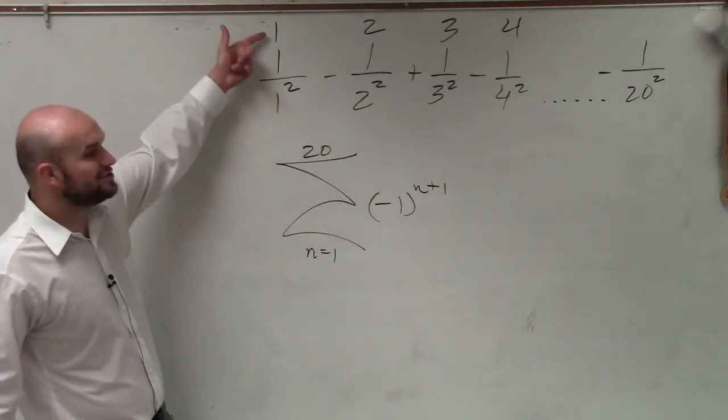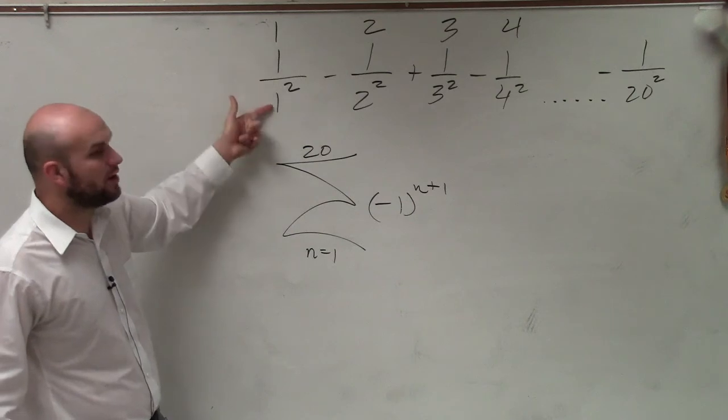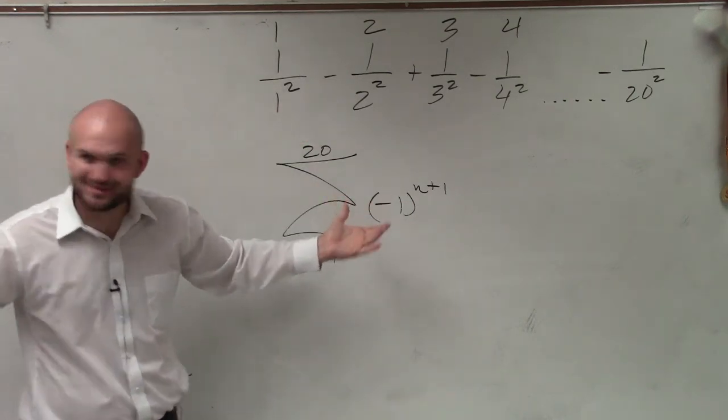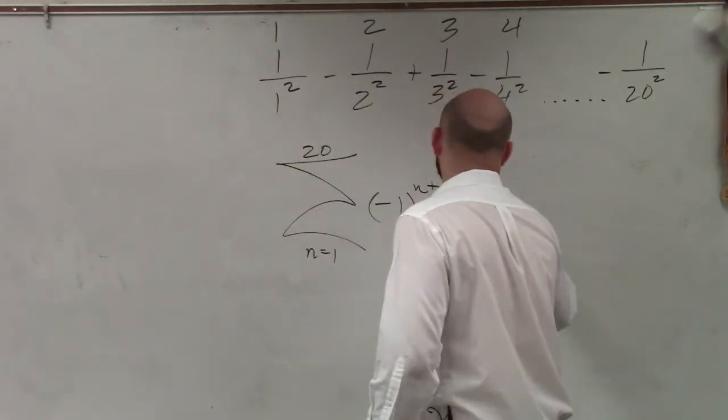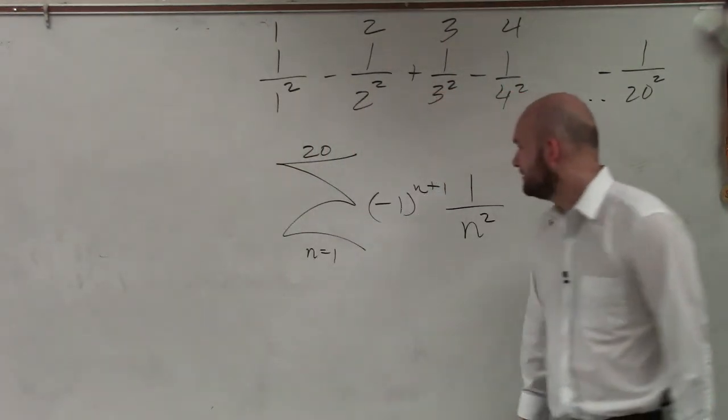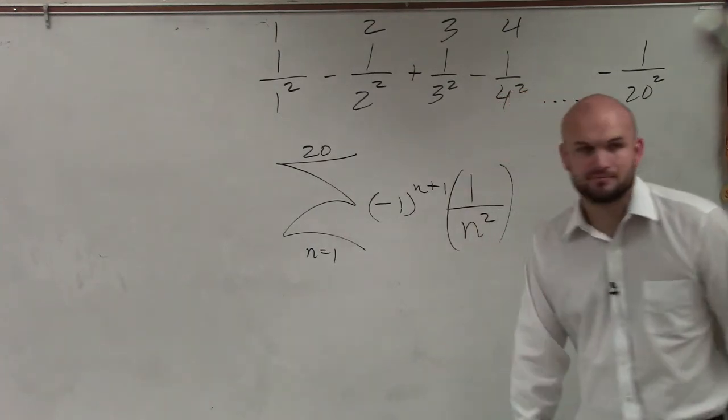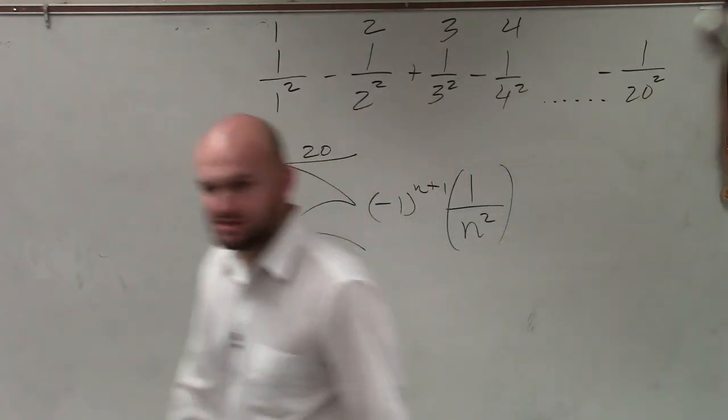Now, again, what do I need to do for this formula when I plug in 1 to get 1 over 1 squared? An n in for the squared, right? And there you go. That's your formula. OK? And that's it. That's all you guys got.